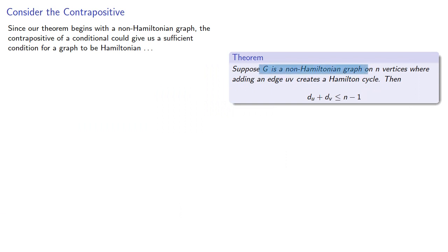Since our theorem begins with a non-Hamiltonian graph, the contrapositive of a conditional could give us a sufficient condition for a graph to be Hamiltonian.